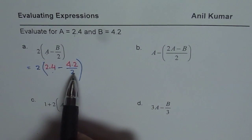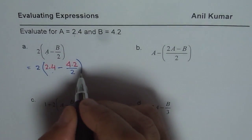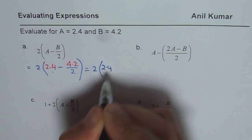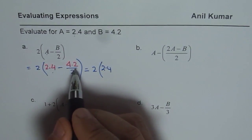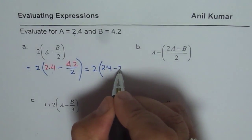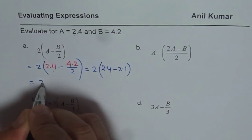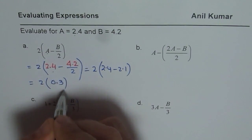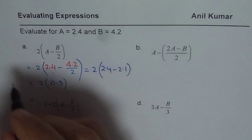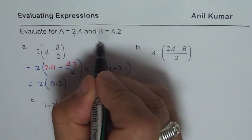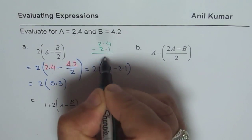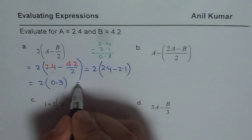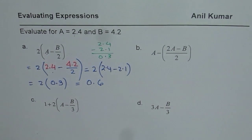Now we need to simplify and evaluate. So let us simplify this first. It is 2 times 2.4, and 4.2 divided by 2 is 2.1, so minus 2.1. That gives you 2 times 2.4 minus 2.1 is 0.3. You can also do this on the side. Like you can do 2.4 take away 2.1, align the decimals, you get 0.3. And now you multiply, so you get 0.6 as your answer.